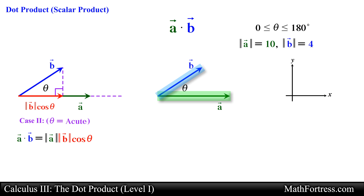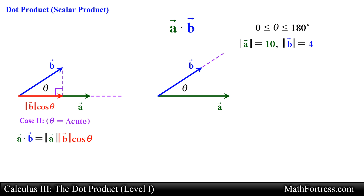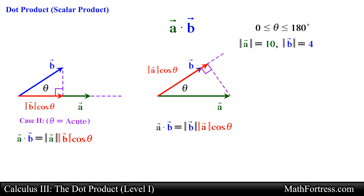Now what if we wanted to do the opposite and find the projection of vector a in the direction of vector b? It turns out we can take components along any direction that's convenient, not just the x and y axes. We draw a line in the direction of vector b and a line perpendicular to it that stops at the tip of vector a. Using right triangle trigonometry, the projection of vector a along vector b equals the magnitude of vector a times cosine of theta. Multiplying this by the magnitude of vector b gives us the dot product. Notice that in both cases the final expression is the same.